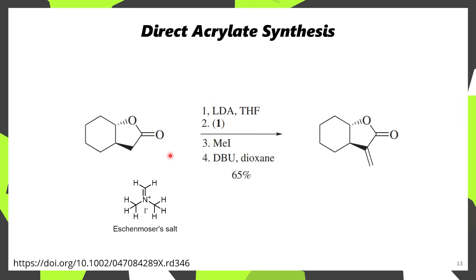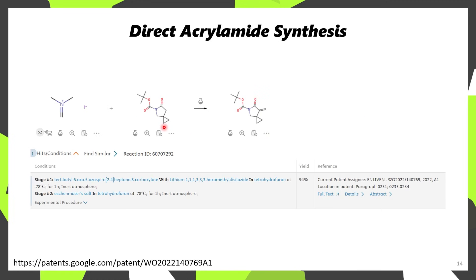Here's an example where a lactone was deprotonated at the alpha position and the corresponding enolate was reacted with Eschenmoser's salt. This was then methylated to form the quaternary ammonium salt, and upon treatment with the strong base DBU, elimination occurred, forming an exocyclic alkene, which in this case is also an acrylate. This has been applied to other examples such as the acrylamide shown here.